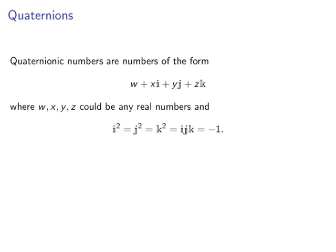This led to the quaternions. Quaternions, or quaternionic numbers, are numbers of the form w plus xi plus yj plus zk, where w, x, y, and z are any real numbers, and i, j, and k satisfy these relations.